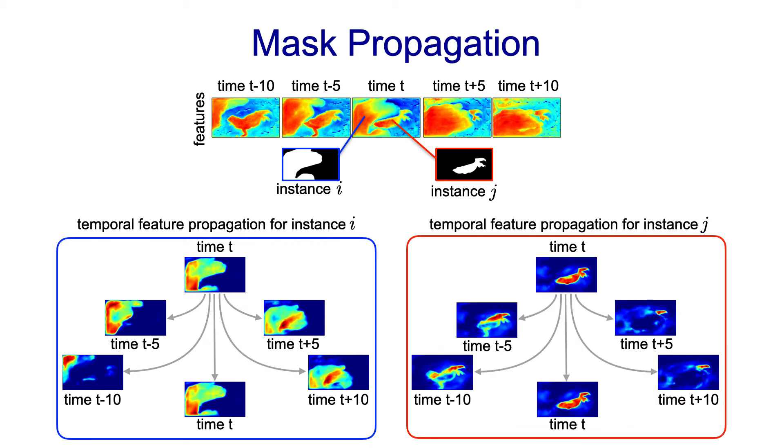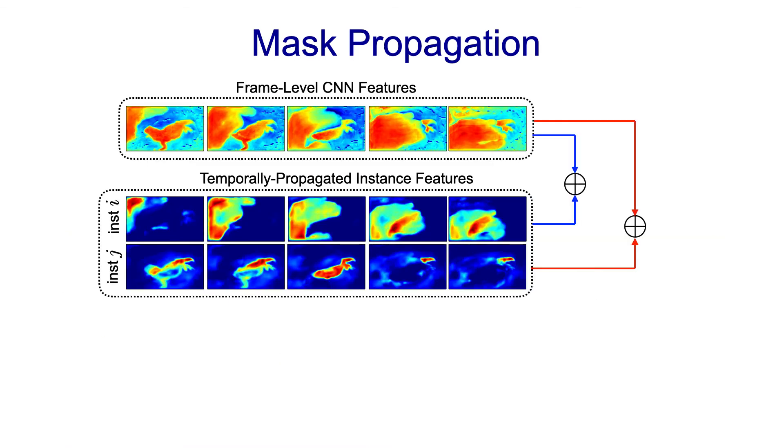As mentioned before, the temporal feature propagation procedure is performed for every object instance appearing in the middle frame. Afterwards, the temporally propagated feature tensors obtained from frame t are combined with the frame-level features previously computed for each time step.